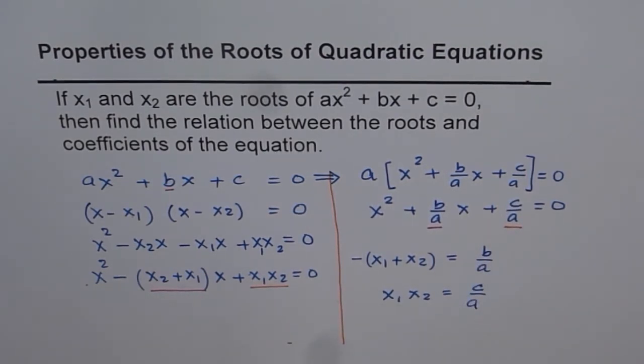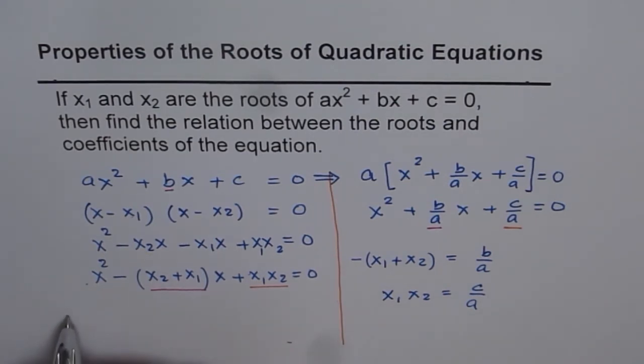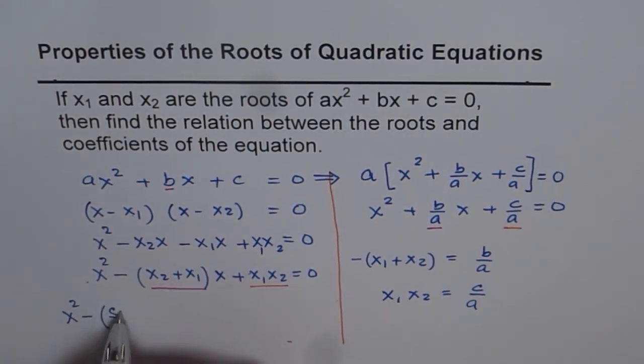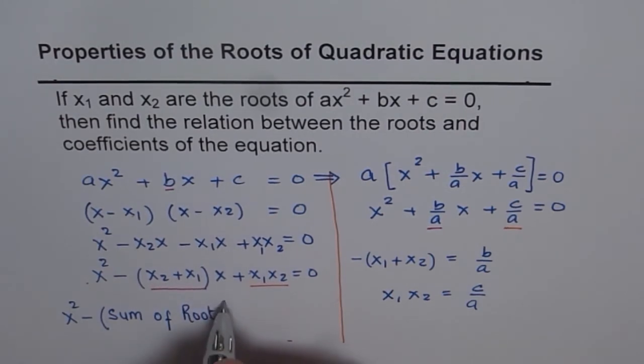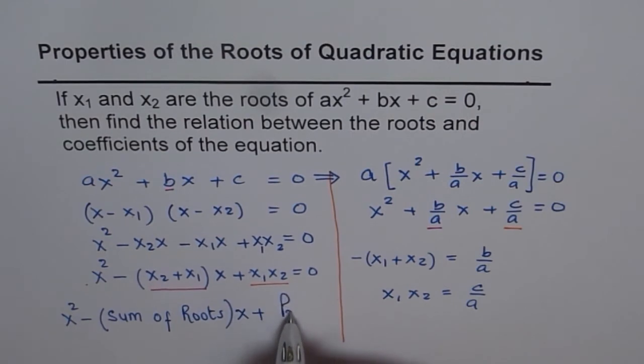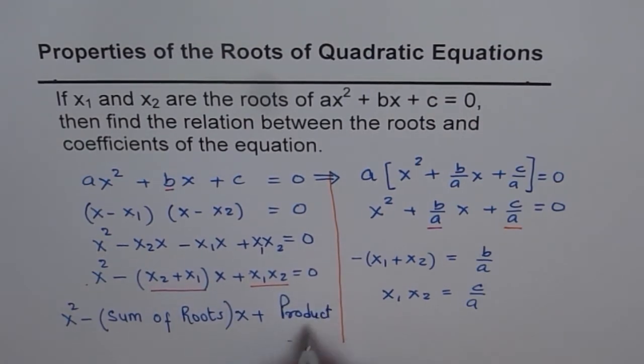So that is how they are related. And we can write the equation also in terms of sum and product of the roots. So we can say the quadratic equation will be x squared minus sum of roots times x plus product of roots equals 0.